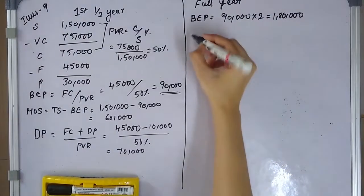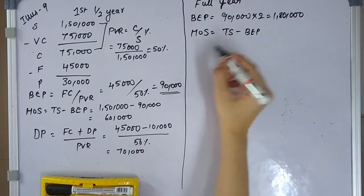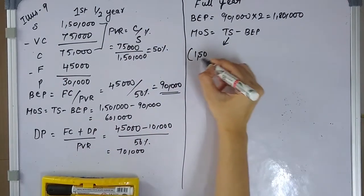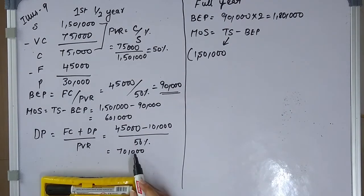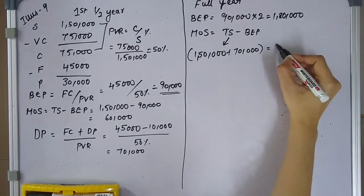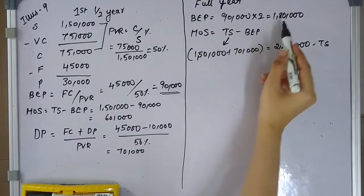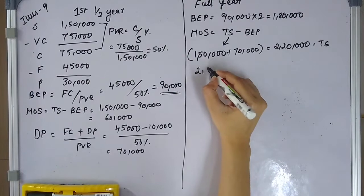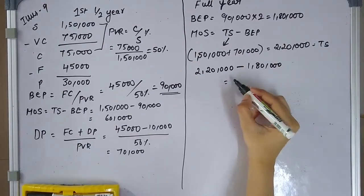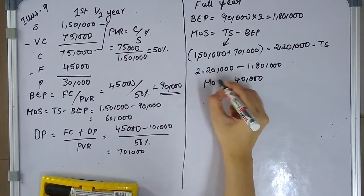For the margin of safety for the whole year: total sales equals first half sales of 150,000 plus expected second half sales of 70,000, giving total sales of 220,000. Margin of safety equals total sales minus BEP: 220,000 minus 180,000 equals 40,000.